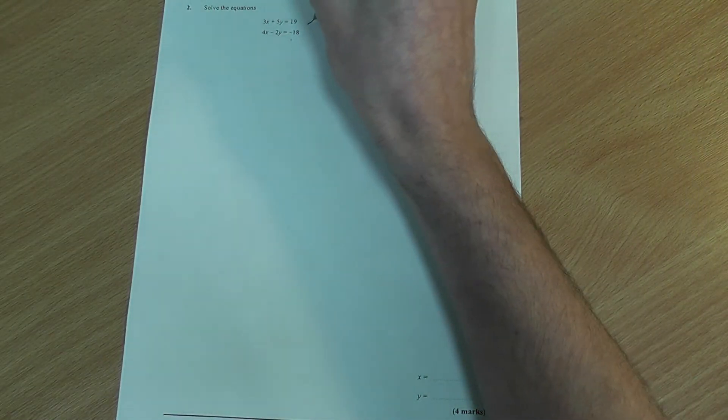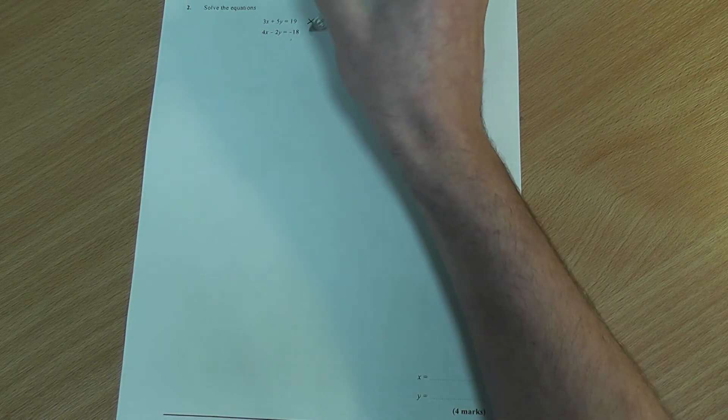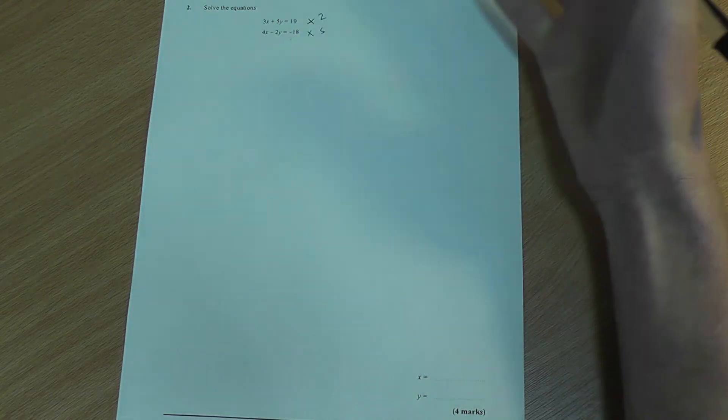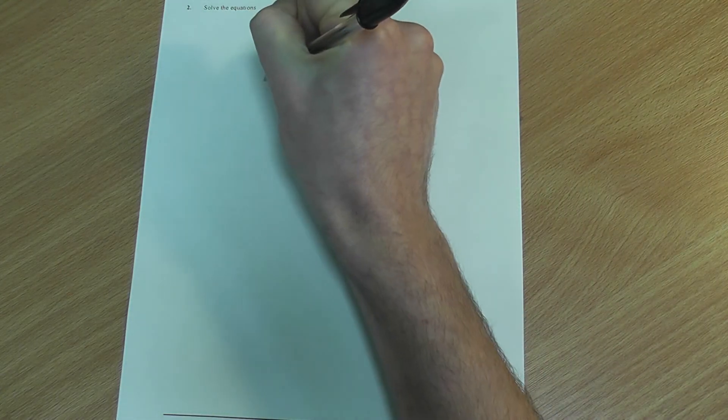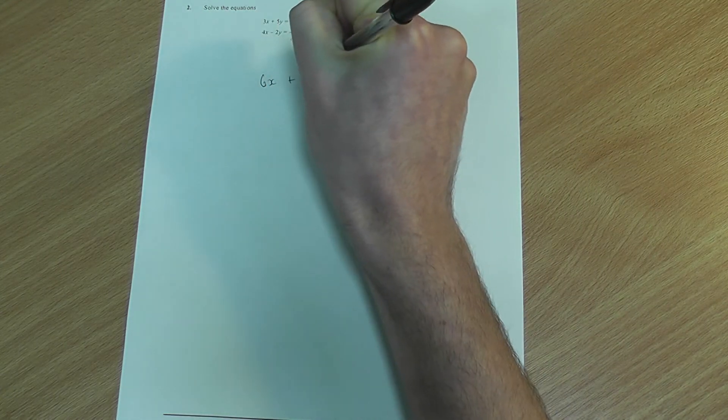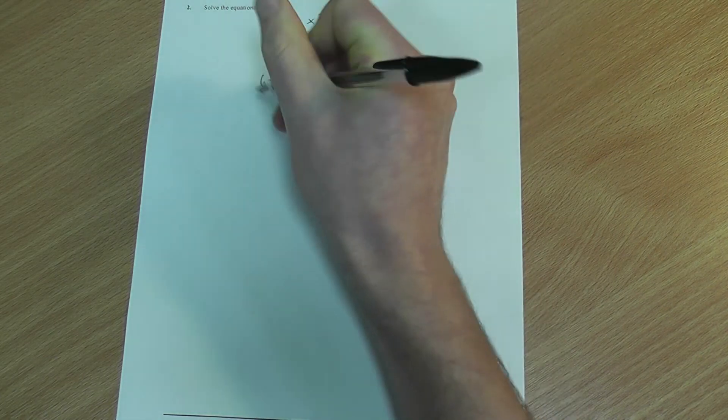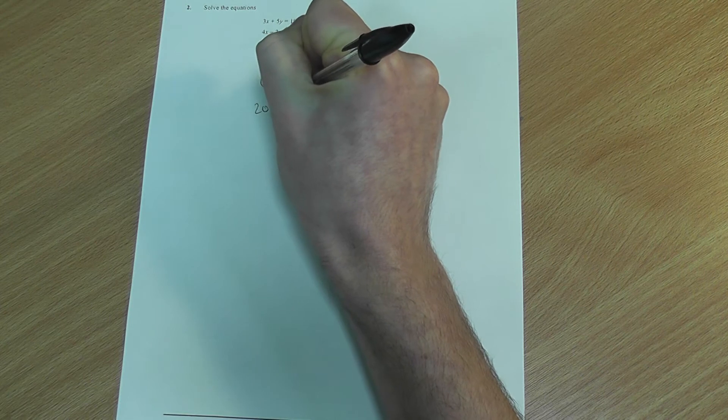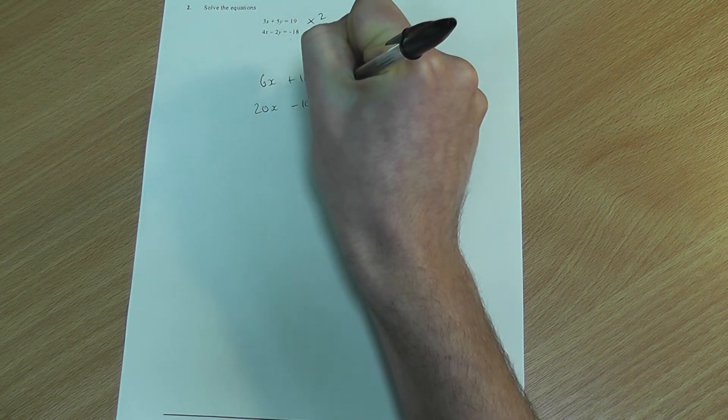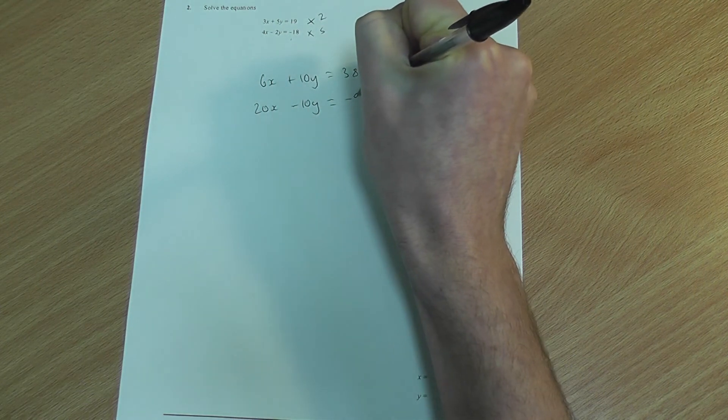Now, what I'm going to do is make the y's the same by times in the first one by 2 and the second equation by 5. Now, new equations I get are 6x plus 10y equals 38 and then I get 20x minus 10y equals minus 90.